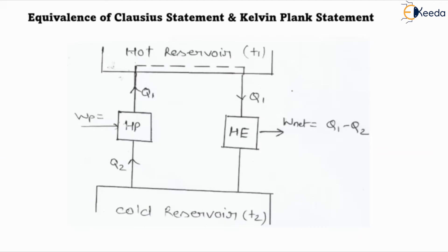These two statements are different, but they will be proved equivalent by showing that the violation of one statement implies the violation of the second, and vice versa. We can show the equivalence of the Clausius statement and Kelvin-Planck statement with the help of one diagram, in which we consider two devices: one is a heat engine and another is a heat pump.